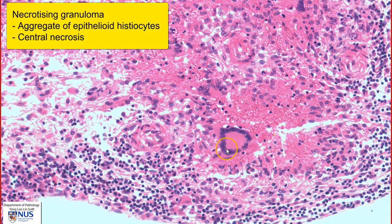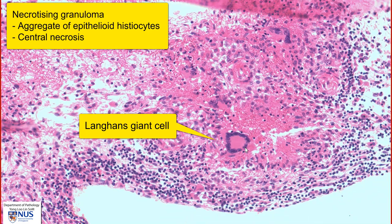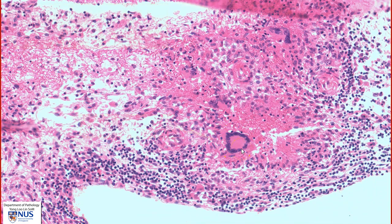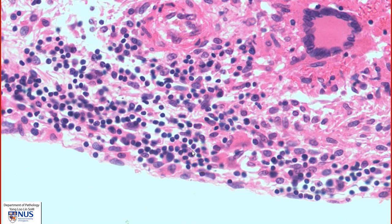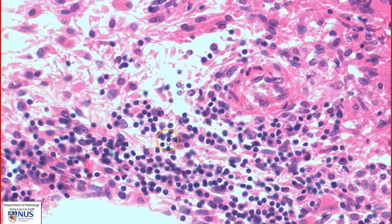We also have these scattered multinucleated giant cells, known as Langhans cells, as the nuclei are arranged in a horseshoe-shaped pattern. In this particular cell, the nuclei appear to be arranged in a ring, and this is because of the plane of sectioning. Around the granuloma, we can also see lots of chronic inflammatory cells, which are composed mostly of lymphocytes as well as some plasma cells.